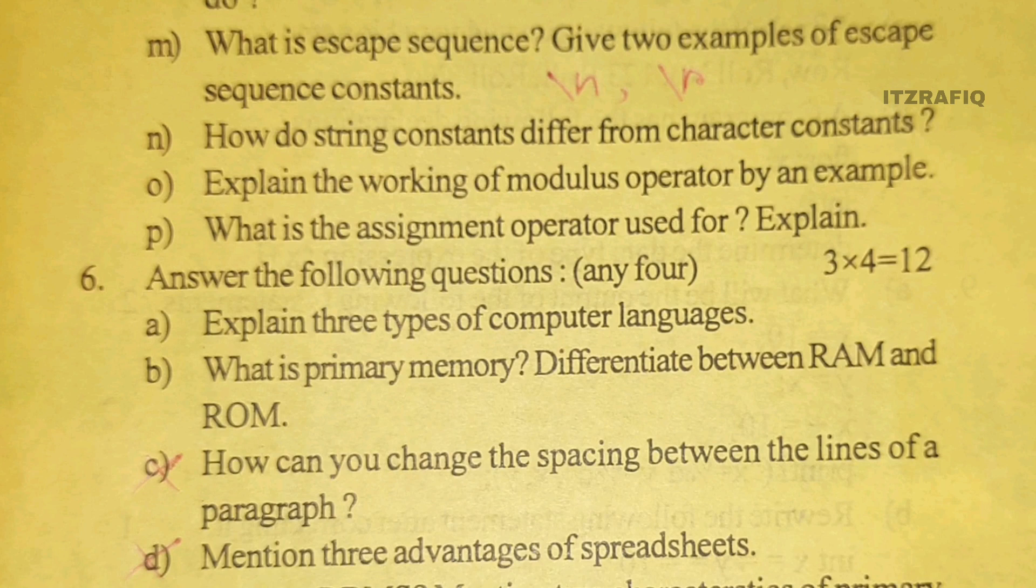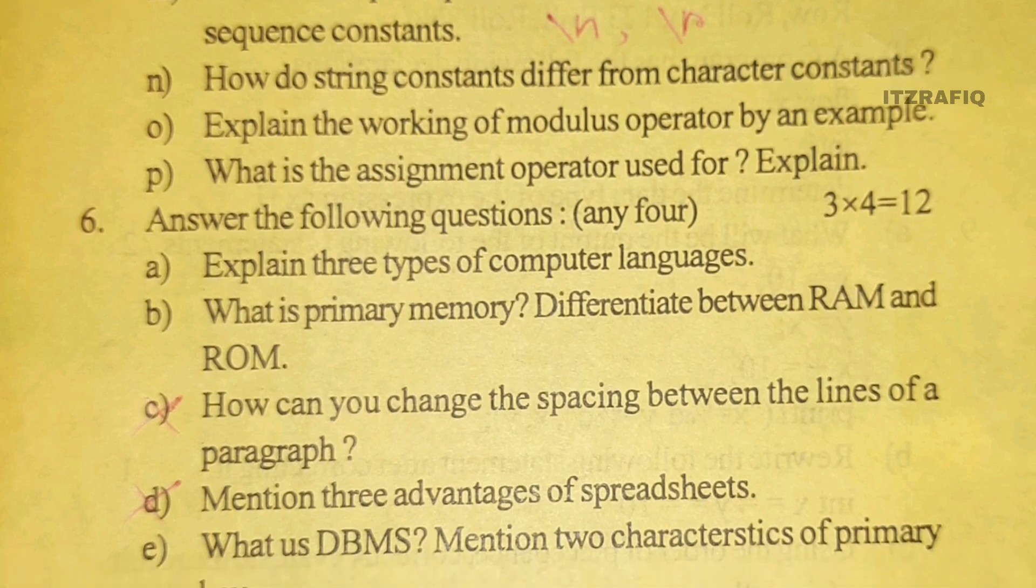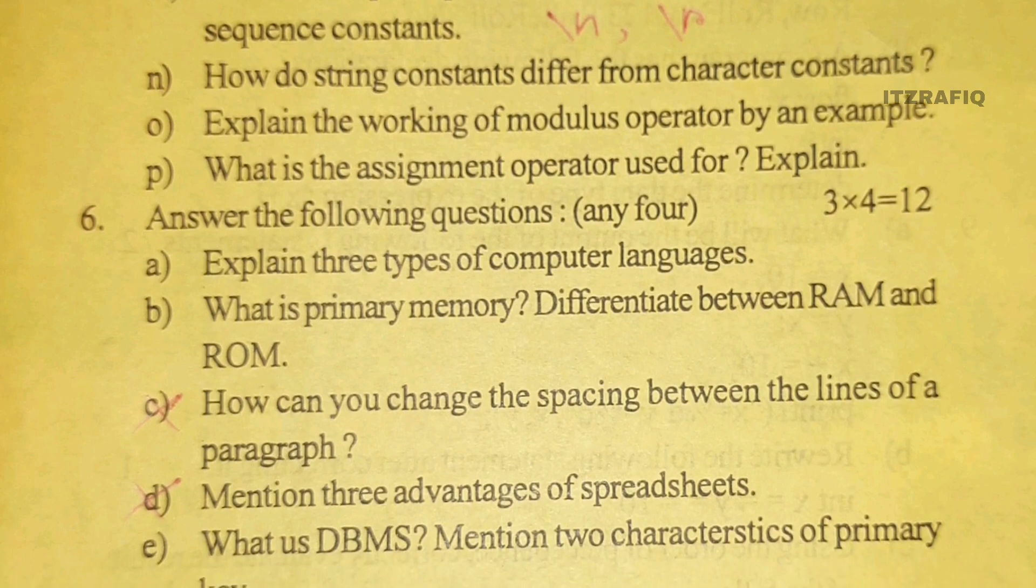How do string constants differ from character constants? A character constant is written within single inverted commas and string constant is written within double inverted commas. Character constant size is one byte, string is four bytes. Explain the working of modulus operator. Modulus operator is used to find out the remainder. Example: 10 modulus 3, the output will be 1.